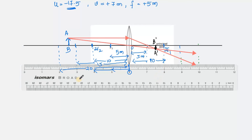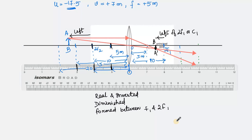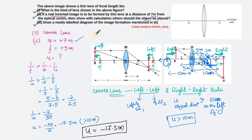As you can see, following the Left-Left Right-Right rule: the object placed to the left of 2f1 produces an image to the left of 2f2. If you take values accurately using a scale, you will definitely get a correct ray diagram. The image characteristics are: it is real, inverted, and diminished, formed between f1 and 2f1.